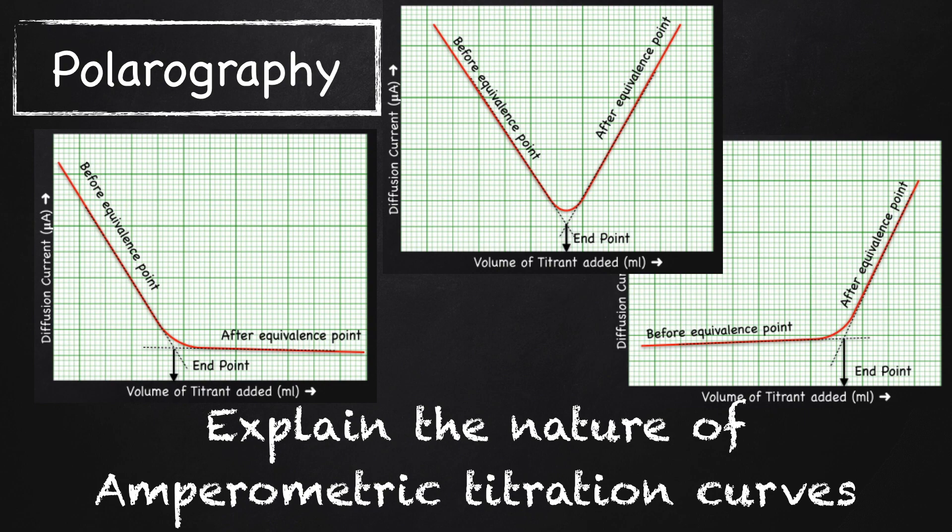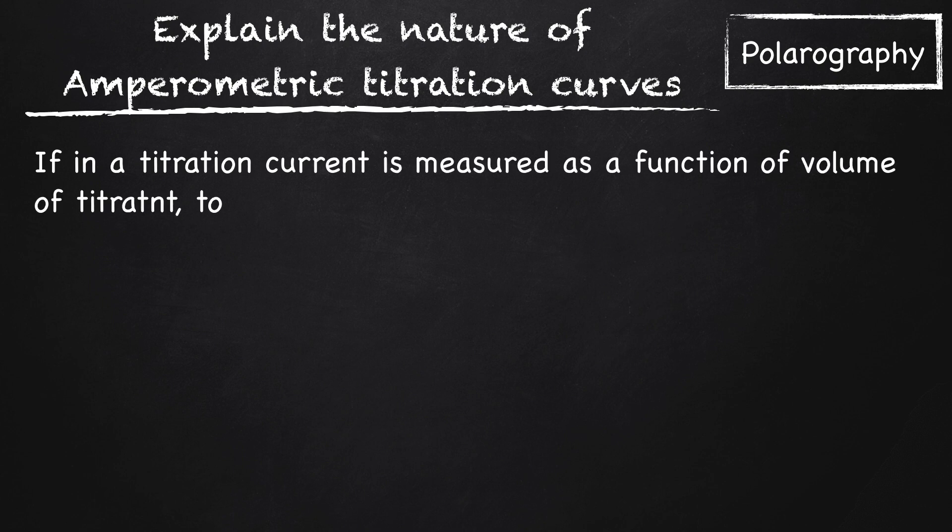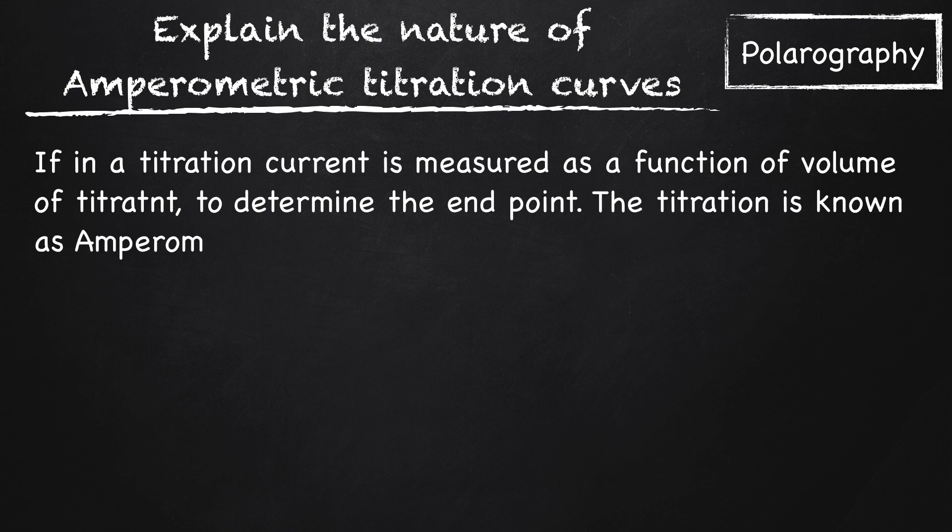Explain the nature of amperometric titration curve. If in a titration, current is measured as a function of volume of titrant to determine the end point, the titration is known as amperometric titration.